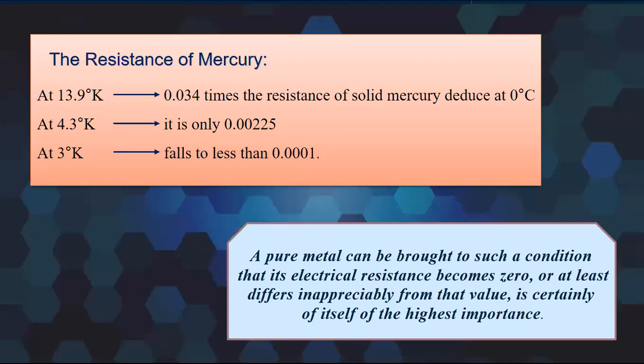The value of resistance of mercury was: at 13.9 Kelvin it was 0.034 times the resistance of solid mercury, whereas at 4.3 Kelvin it is only 0.00225 times, and at 3 Kelvin it falls to less than 0.001. This means a pure metal can be brought to such a condition that its electrical resistance becomes zero, which certainly is of high importance.